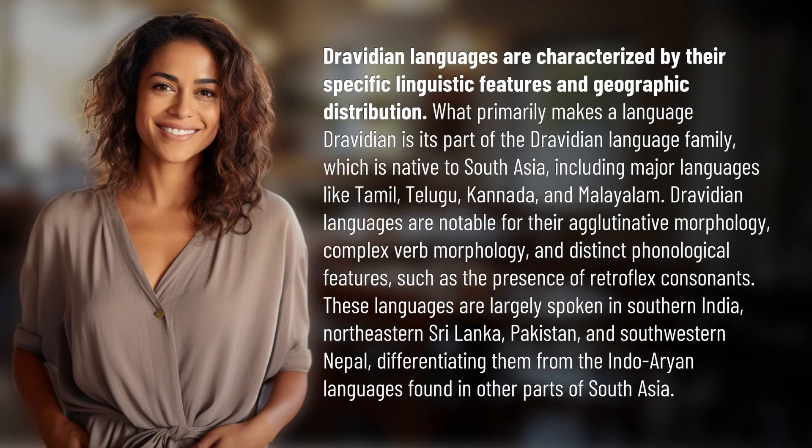Dravidian languages are characterized by their specific linguistic features and geographic distribution. What primarily makes a language Dravidian is it's part of the Dravidian language family, which is native to South Asia, including major languages like Tamil, Telugu, Kannada, and Malayalam. Dravidian languages are notable for their agglutinative morphology, complex verb morphology, and distinct phonological features such as the presence of retroflex consonants.